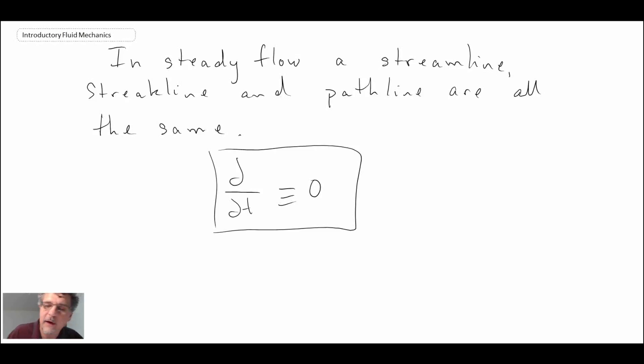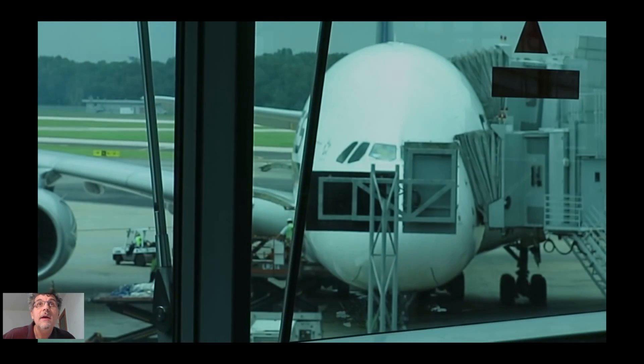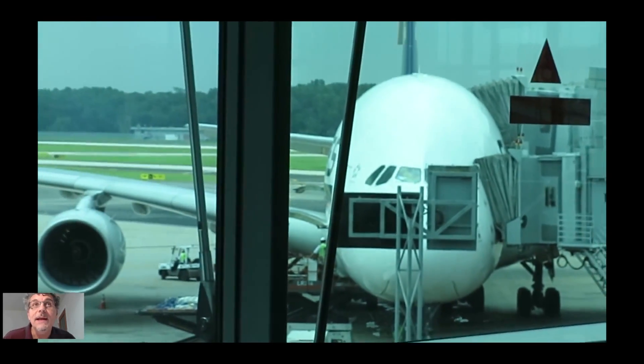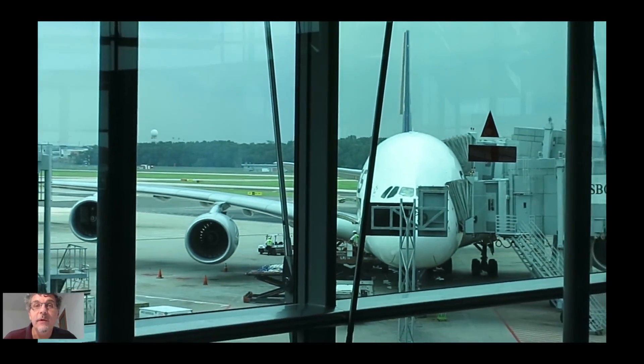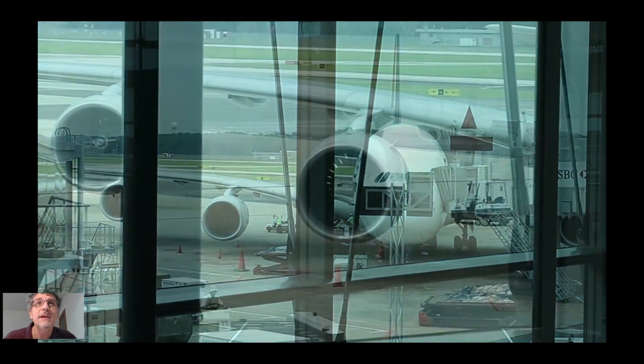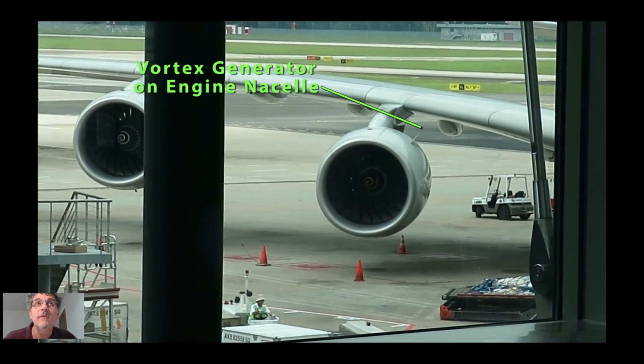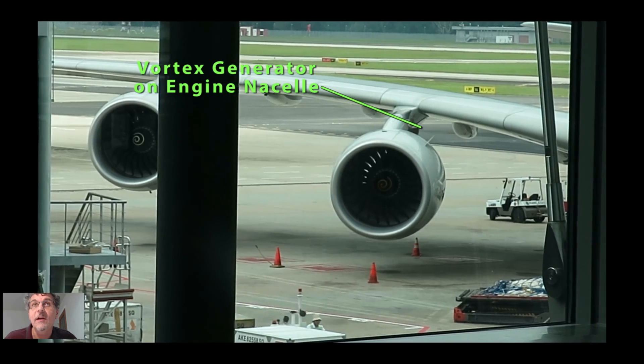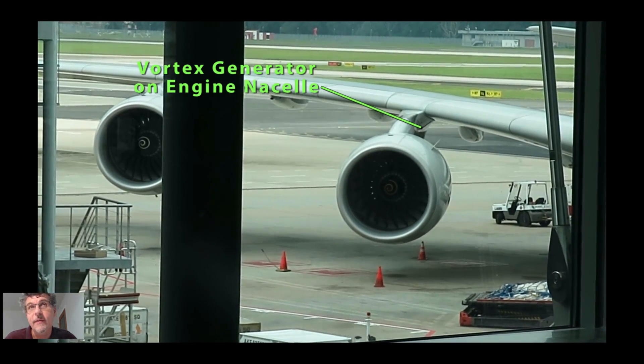What we're going to do now is take a quick look at a video which helps demonstrate streamlines on an aircraft. This is an Airbus 380, and it was on a flight between Singapore and Hong Kong. There you can see the two engines. We're going to focus on the vortex generator of the engine nacelle, because that generates a beautiful vortex, depending where you're seated, that you're able to see coming over the wing.